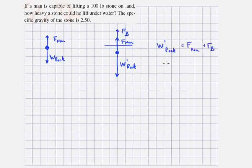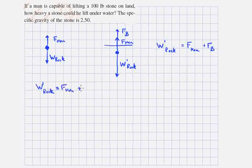That's equal to F man plus the buoyant force. But the buoyant force is equal to the volume of the rock times the density of water times the acceleration of gravity.